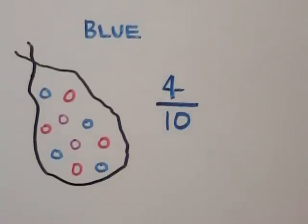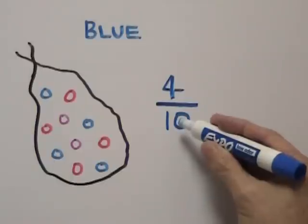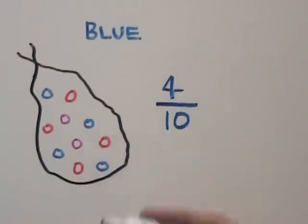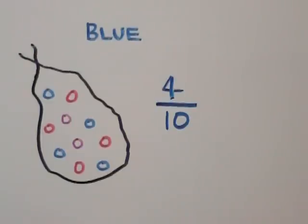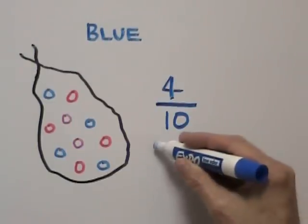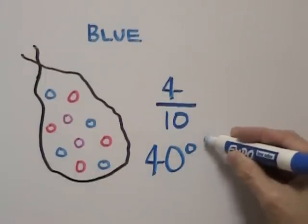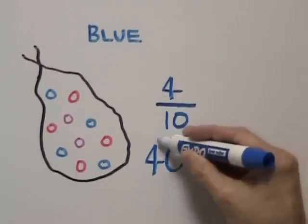Now we can say that there's a 4 out of 10 chance that you'll choose a blue marble from this bag. We can also write our answer in percent and say that there's a 40% chance that you will pick a blue marble from the bag.